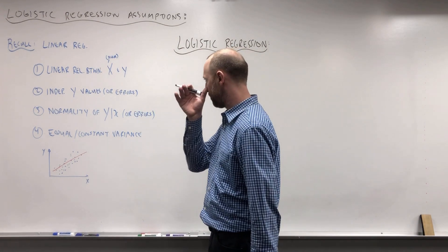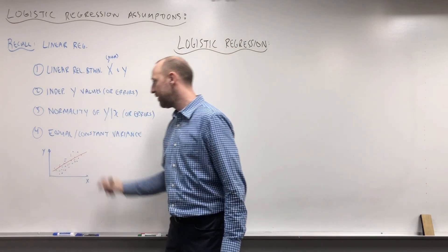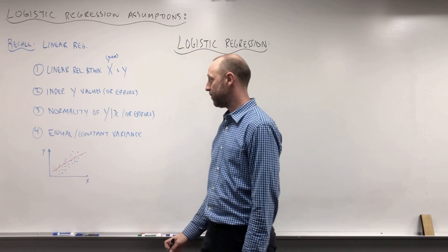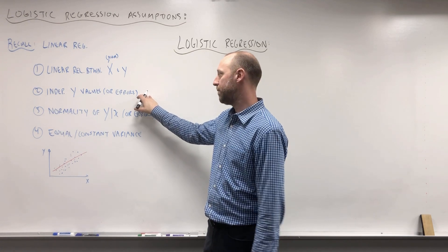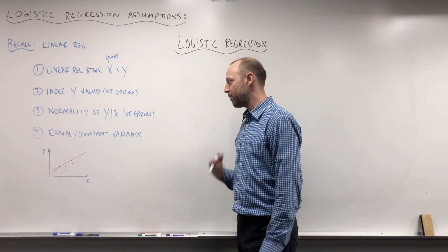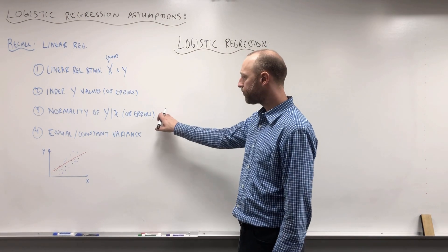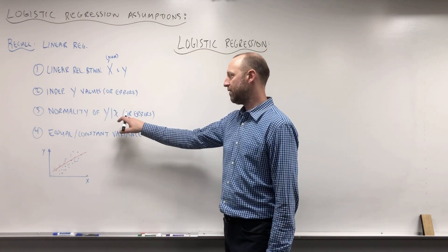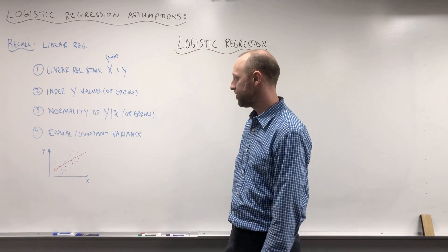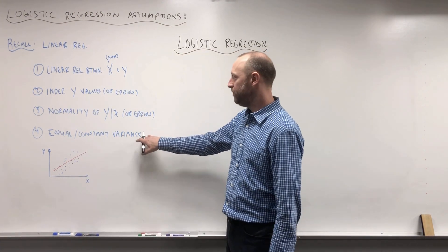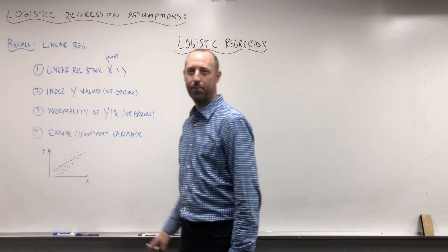In a linear regression model, we assume that there is a linear relationship between x and y, so that a line can represent the relationship between x and y. We assume that the y values are independent — or sometimes stated as the errors are independent — so the outcome for person 1, person 2, person 3, and so on are not related; they're all independent of each other. We assume normality of y given x, or normality of the errors, so that observations are normally distributed around the regression line, and equal or constant variance — the technical word is homoscedasticity — meaning the variability around the line is approximately the same everywhere.